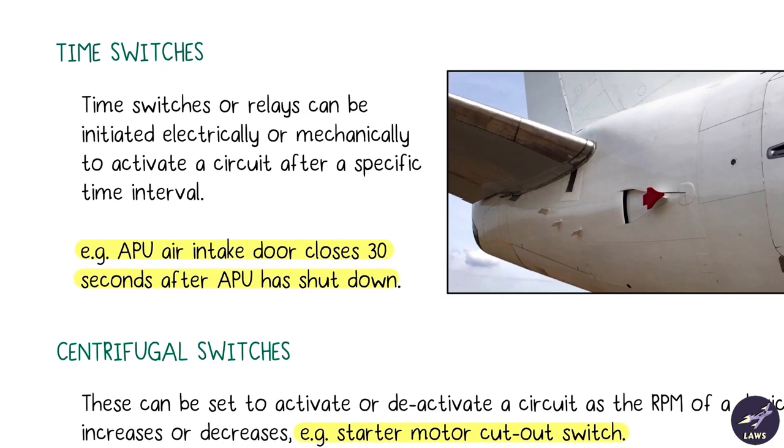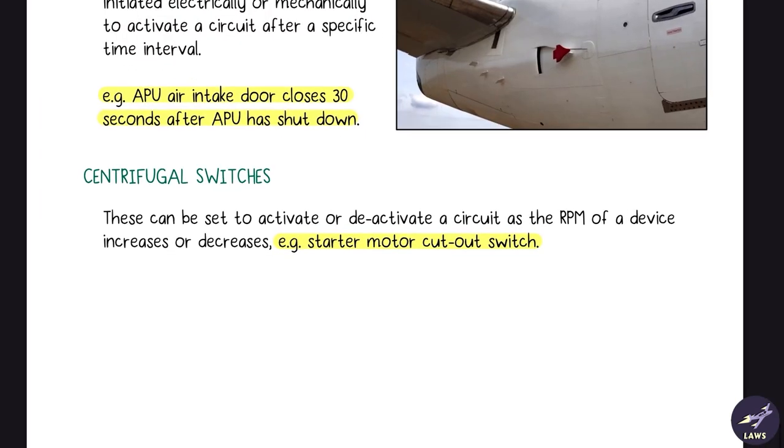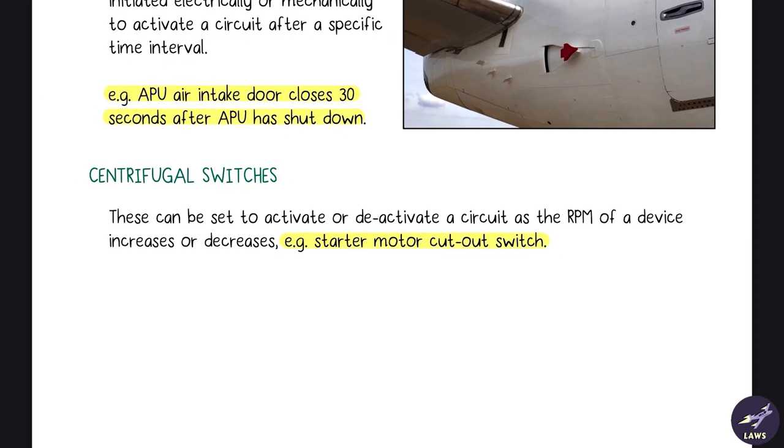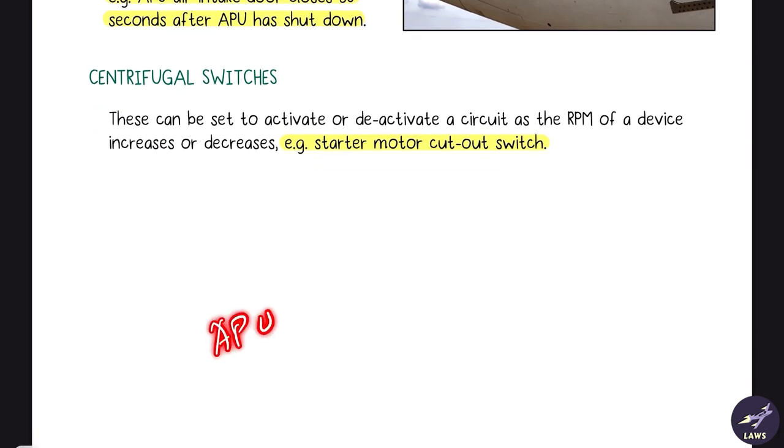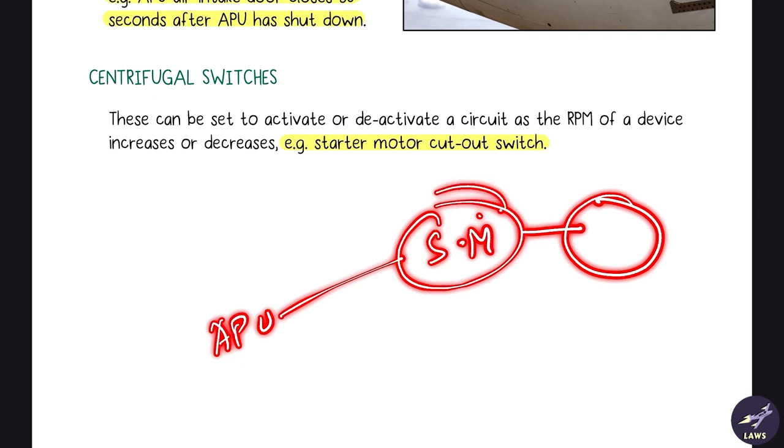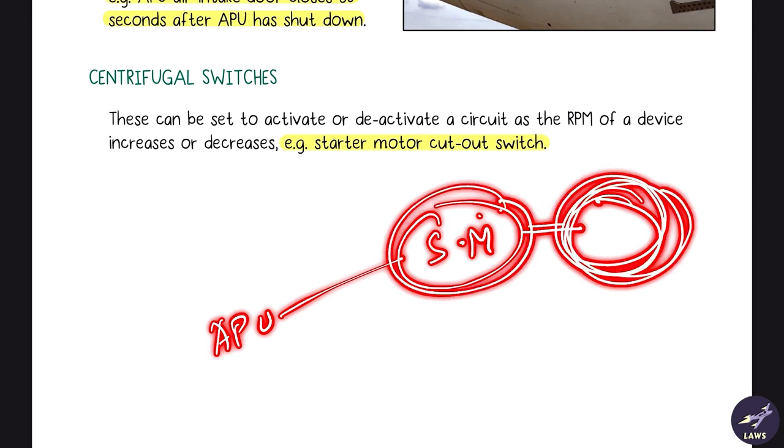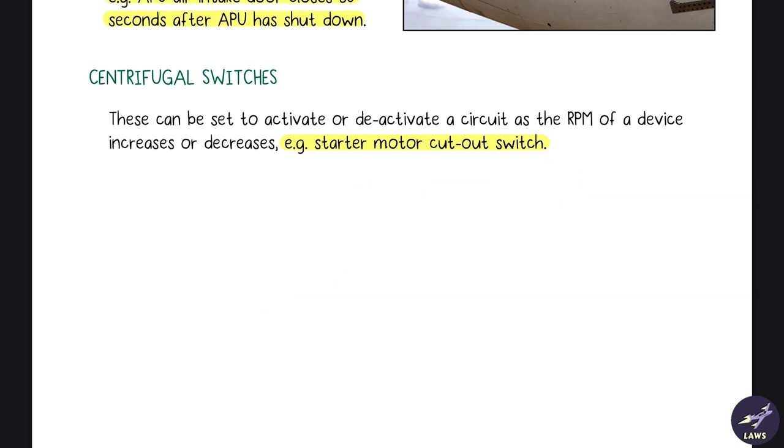Next is centrifugal switches. They can be set to activate or deactivate a circuit based on the RPM of a device, for example starter motor cutout switch. The APU starts the starter motor which then starts the engine. The starter motor rotates, the engine rotates, and once the engine reaches the self-sustaining speed this cuts out. This is an example of a centrifugal switch.